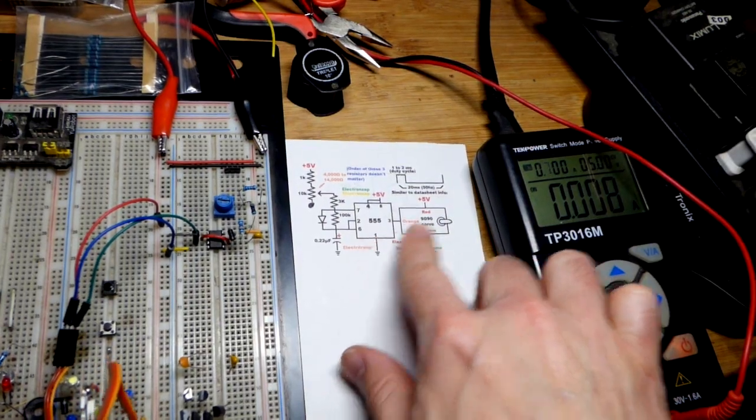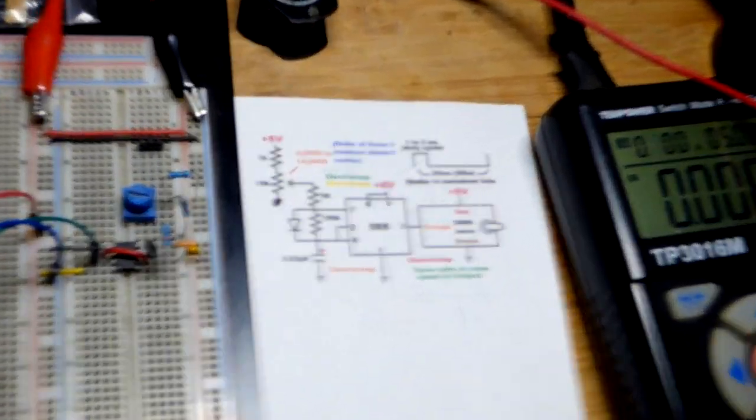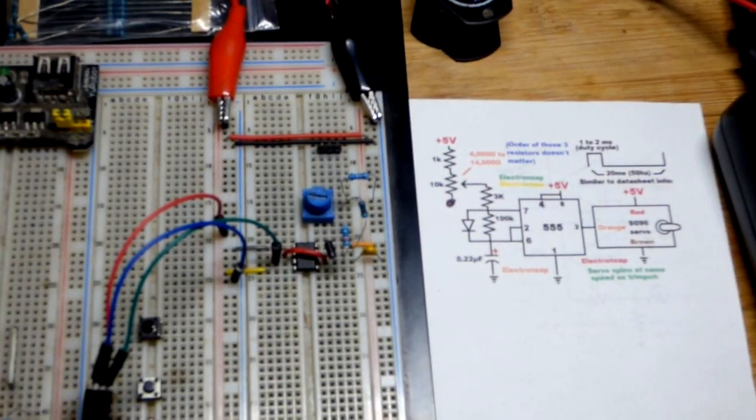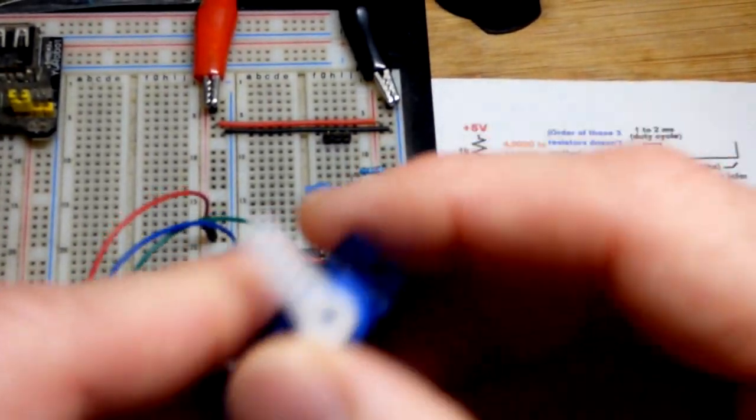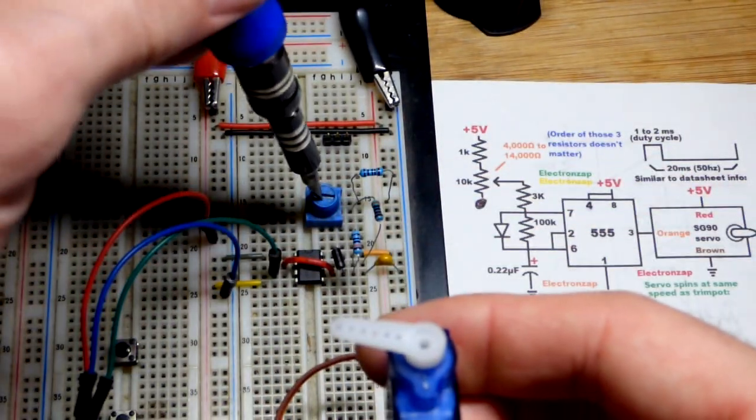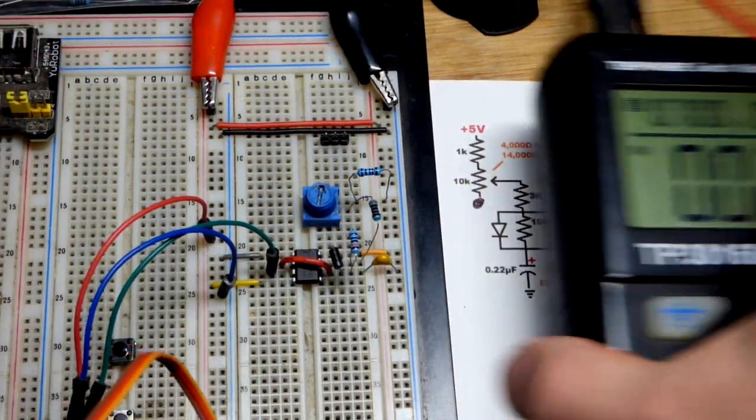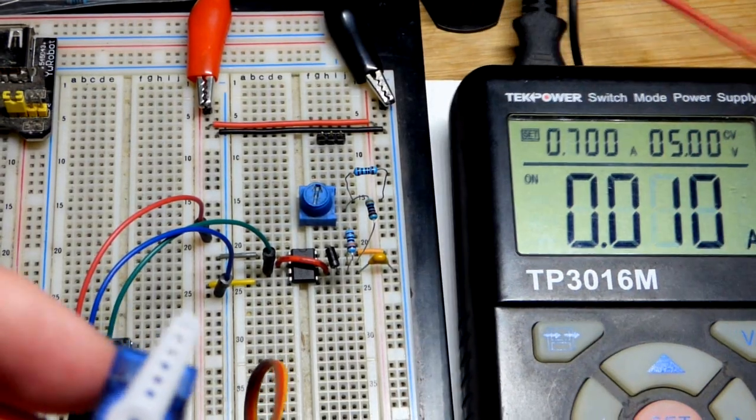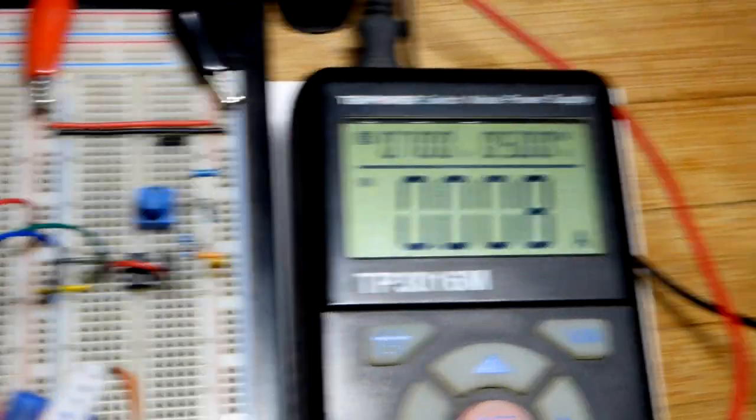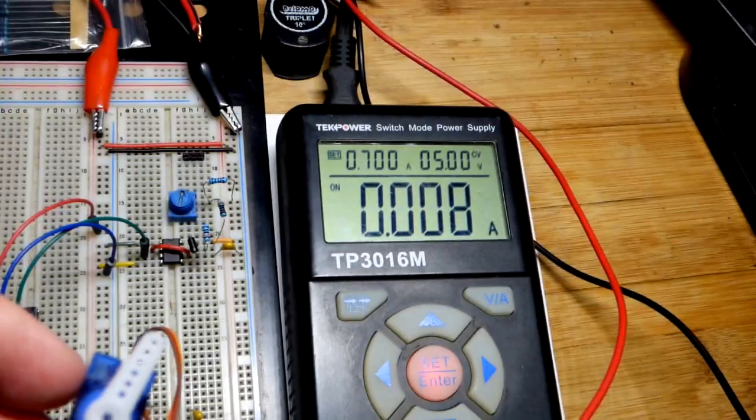Now we got the 555 timer controlling the servo. I'll zoom back if you're watching the short. There's our physical circuit - I just have to move the trim pot and that determines the servo position right there. I'm a little bit limited on how far I can turn the trim pot. The servo won't keep turning the entire time at a certain range.